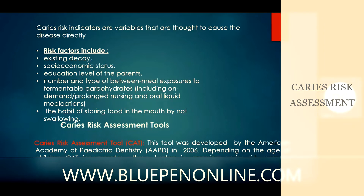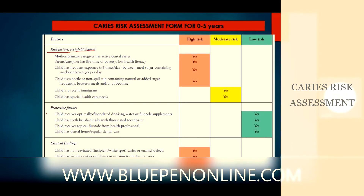One of the KDIS risk assessment methods is the KDIS risk assessment tool, also called CAT. Some also call it CAMERA, which includes a management pathway. This tool was developed by AAPD in 2006. Depending on the age of children, CAT incorporates three factors in assessing KDIS risk: biological, as well as protective factors and clinical findings. It involves risk factors, protective factors, and clinical findings.